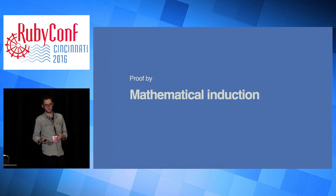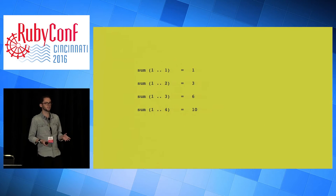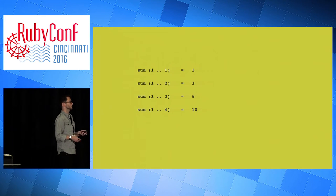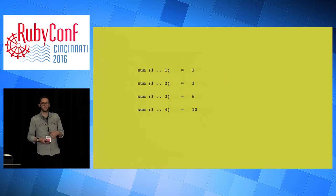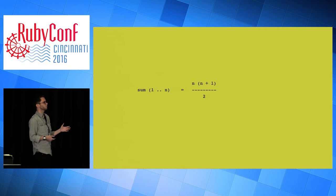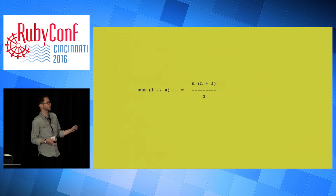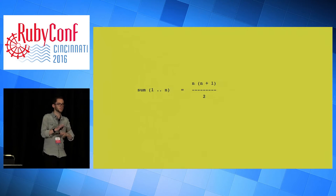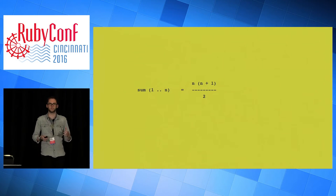There's this idea in mathematics called induction. Say you want to find the sum of the numbers from 1 to n. To list out a few examples: the sum from 1 to 1 is 1, from 1 to 2 is 3, from 1 to 3 is 6, from 1 to 4 is 10. If you continue this, you might eventually realize there seems to follow a pattern - that the sum from 1 to n is equal to n times n+1 all over 2. You can list out loads of examples and you'll never find a counterexample, but that doesn't constitute a proof.